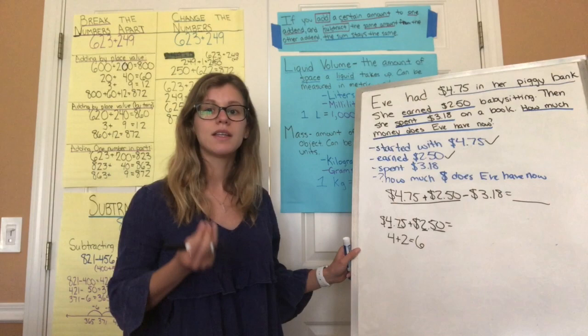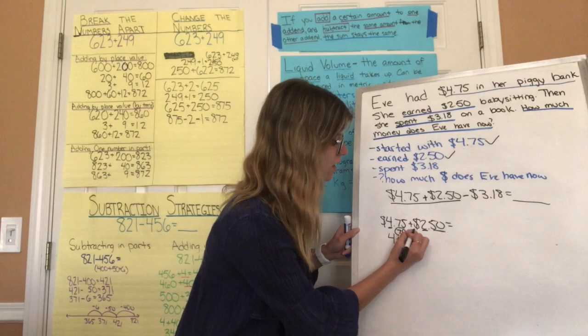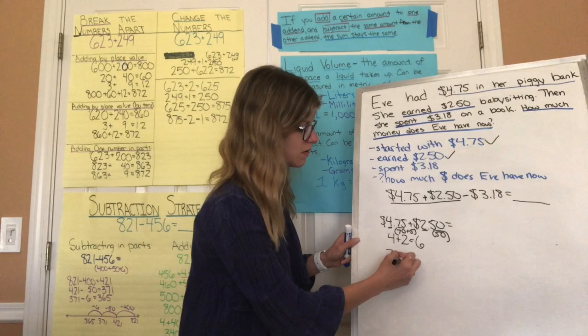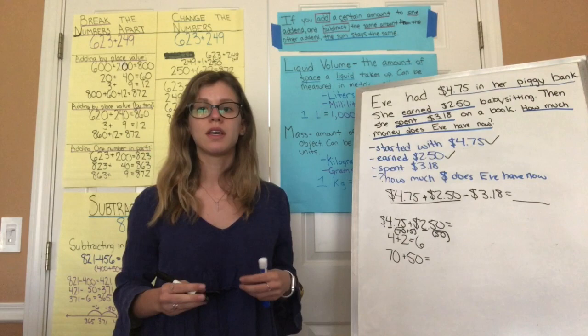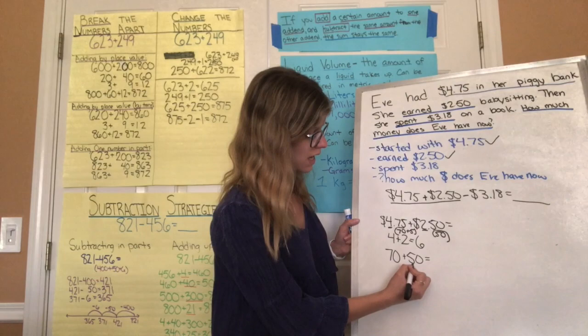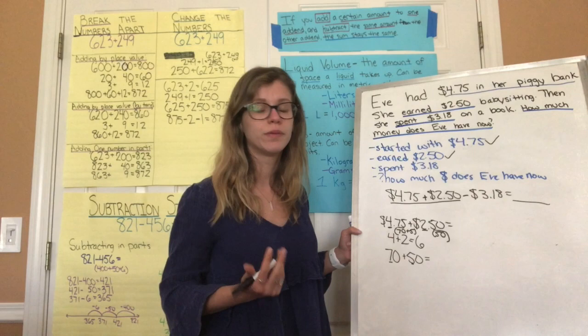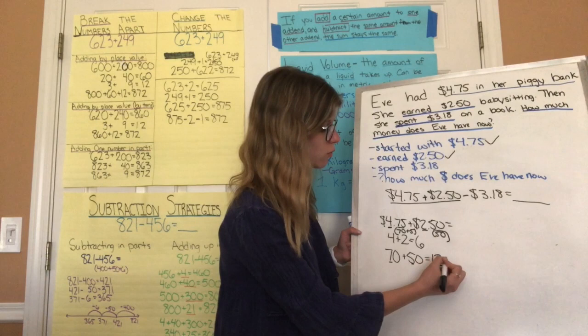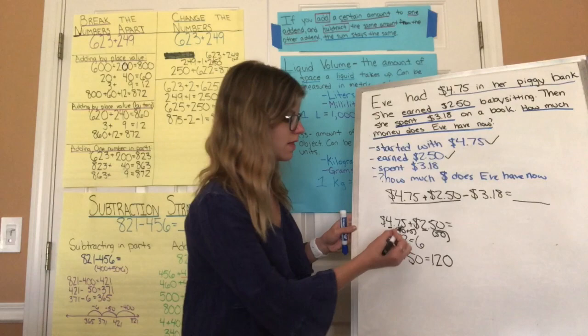I'm going to break the cents down into tens first: seventy cents, five cents, and fifty cents. So I'll add seventy plus fifty. These are just pennies — it's change. Seventy plus fifty: I pay attention to the tens place — seven plus five is twelve — so seven tens plus five tens equals twelve tens, or 120.